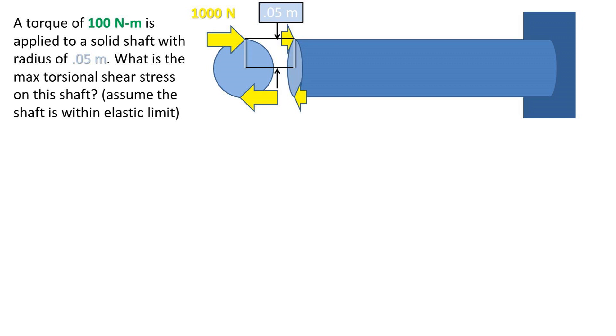I've represented the torque on the right of the screen as two coupled 1,000 newton forces acting on the radius. So the equation for the max torsional shear stress, also known as the shear stress on the outside surface of the cylindrical rod, is torque times the distance to the center, in this case the radius, divided by the polar moment of inertia.